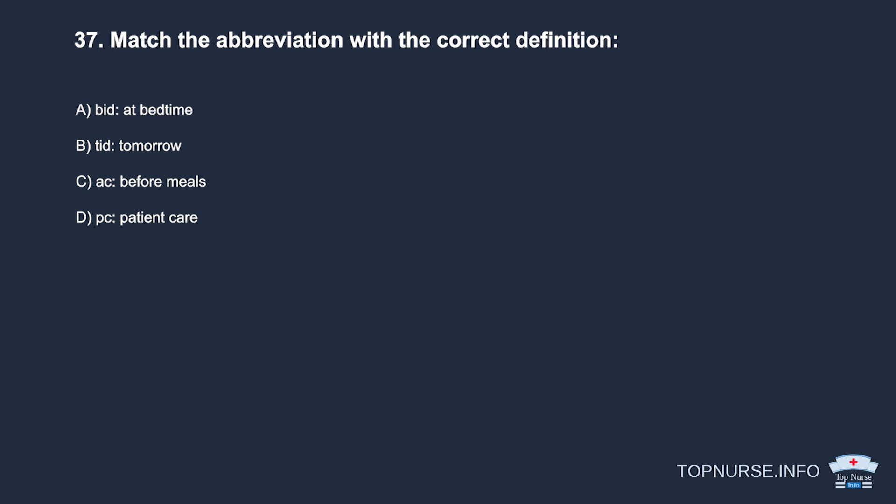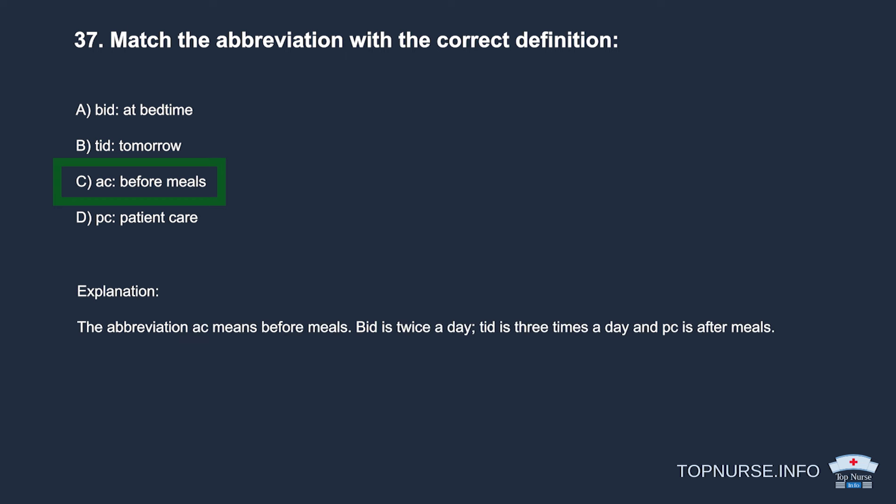Question 37: Match the abbreviation with the correct definition. a. BID — at bedtime. b. TID — tomorrow. c. AC — before meals. d. PC — patient care. Correct answer: c. AC — before meals. The abbreviation AC means before meals. BID is twice a day, TID is three times a day, and PC is after meals.